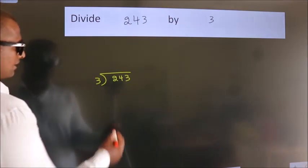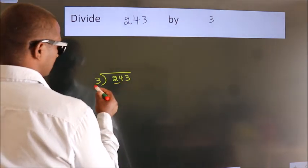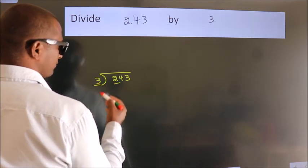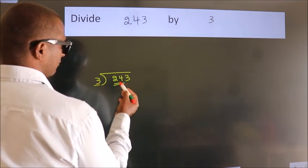Next. Here we have 2, here 3. 2 smaller than 3. So we should take 2 numbers. 24.